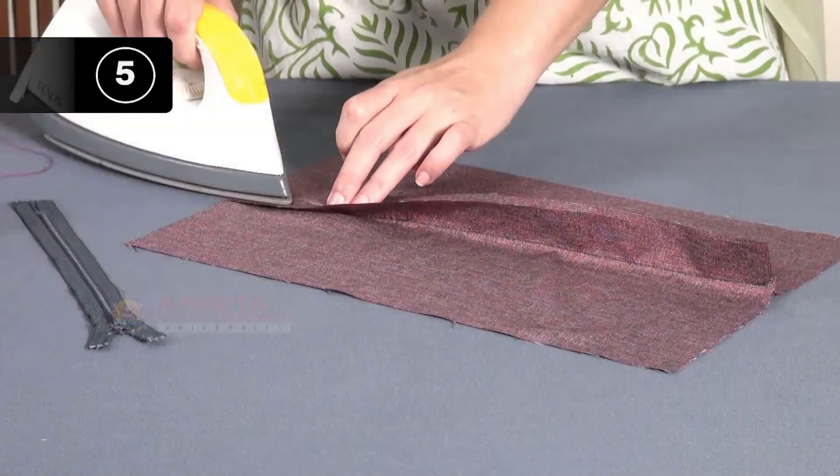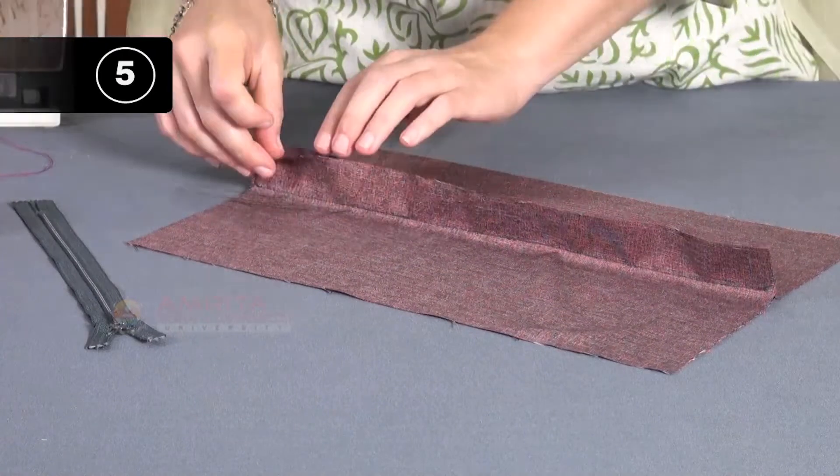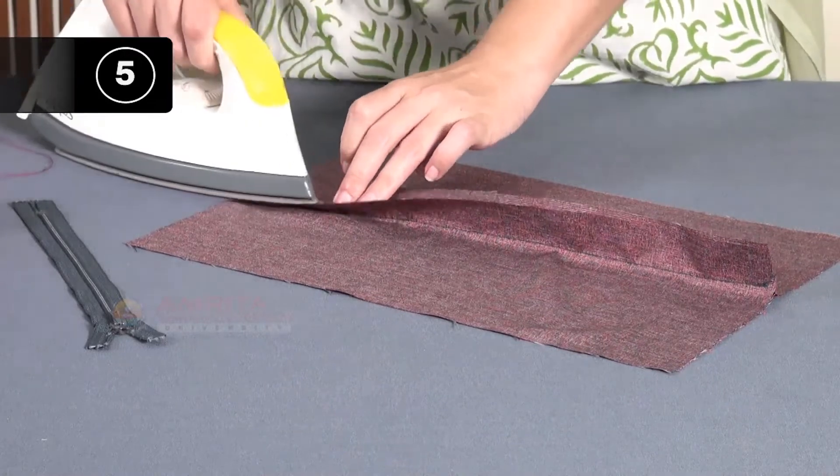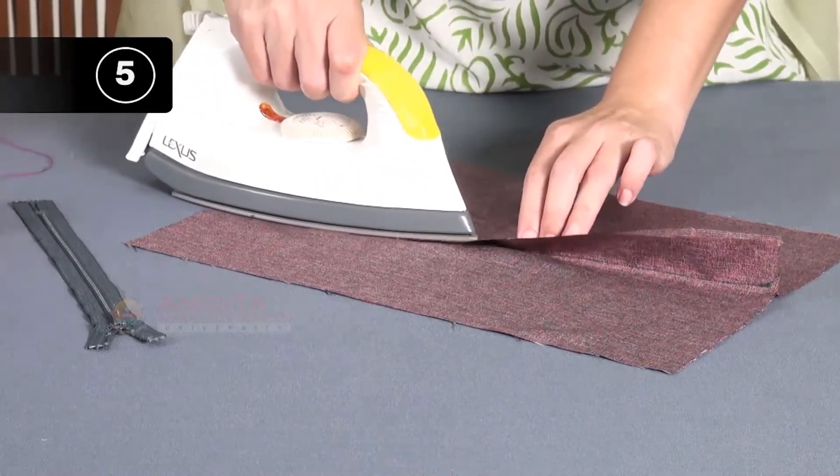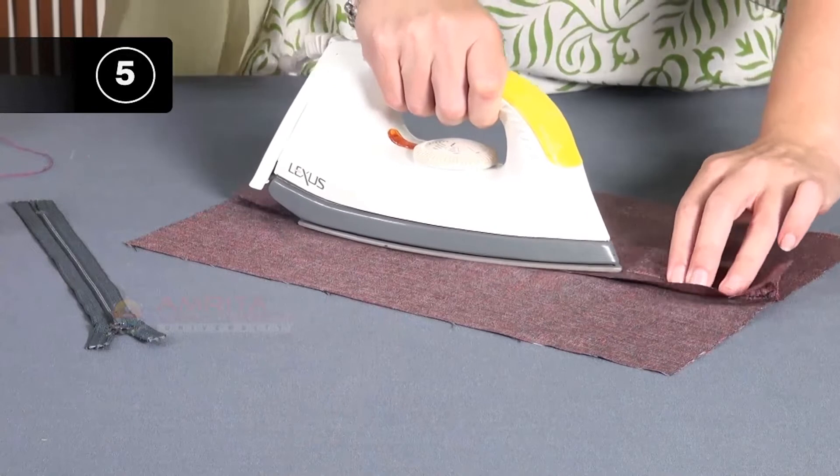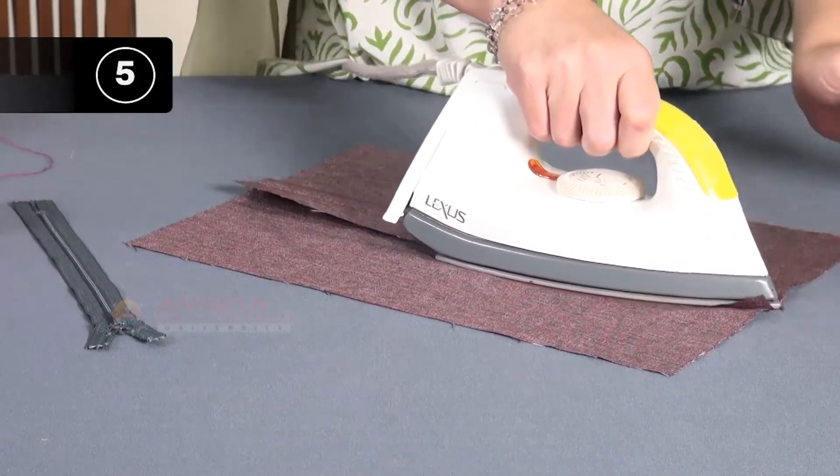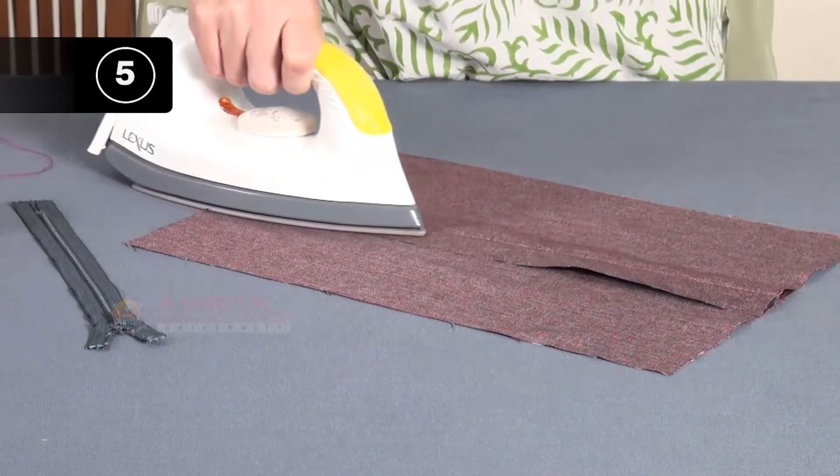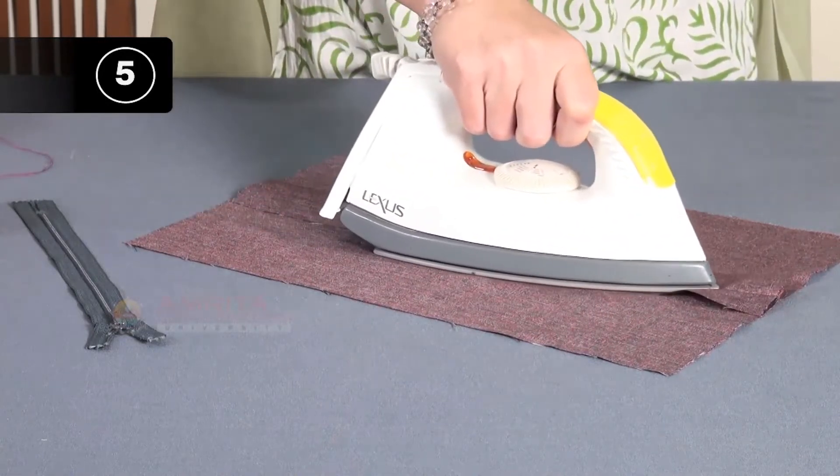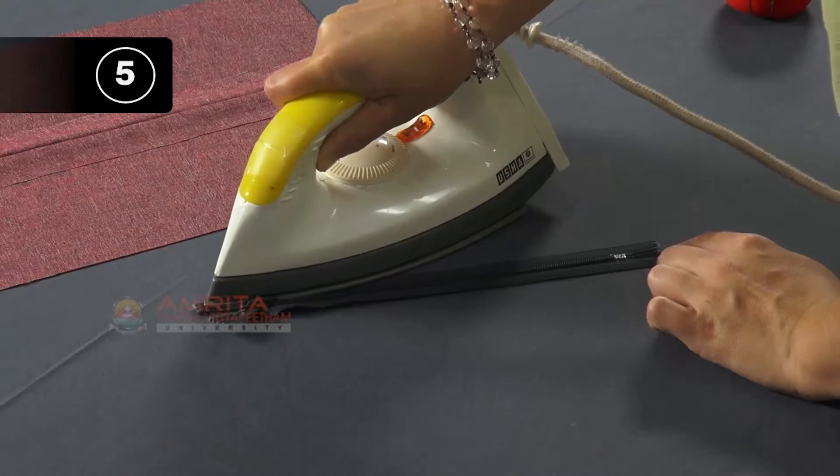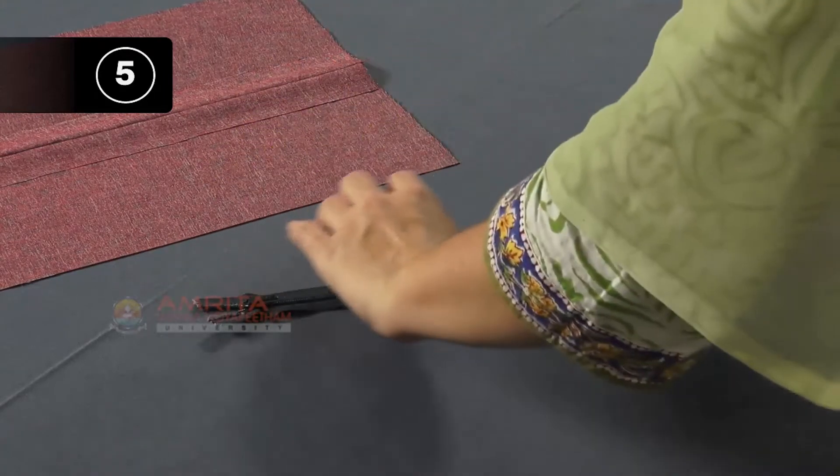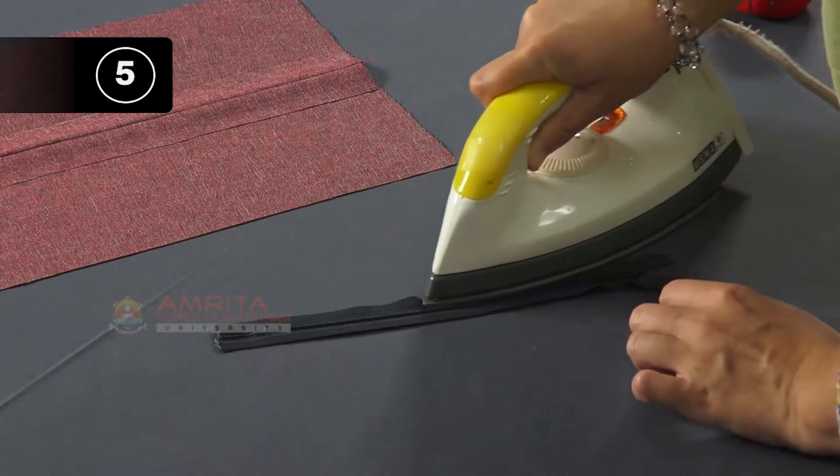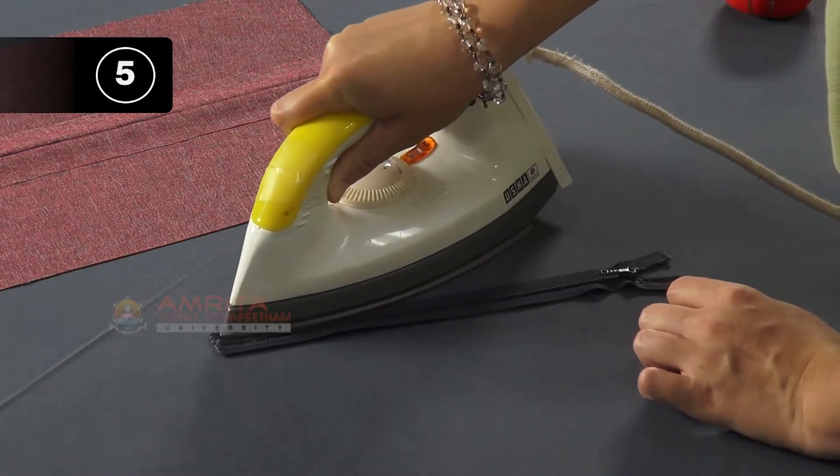Step 5: Iron the seam. Open the fabric and the seam allowance so that the right side of the fabric is no longer together. Then press the seam open. For sewing this zipper, it is helpful to press the zipper flat. Under no circumstances should you place the hot iron directly on the coils or teeth of the zipper, they will melt.